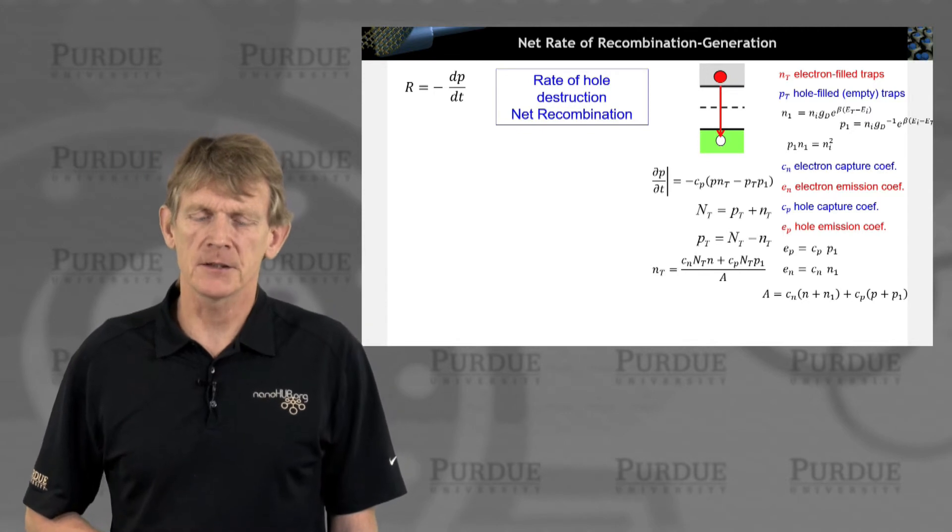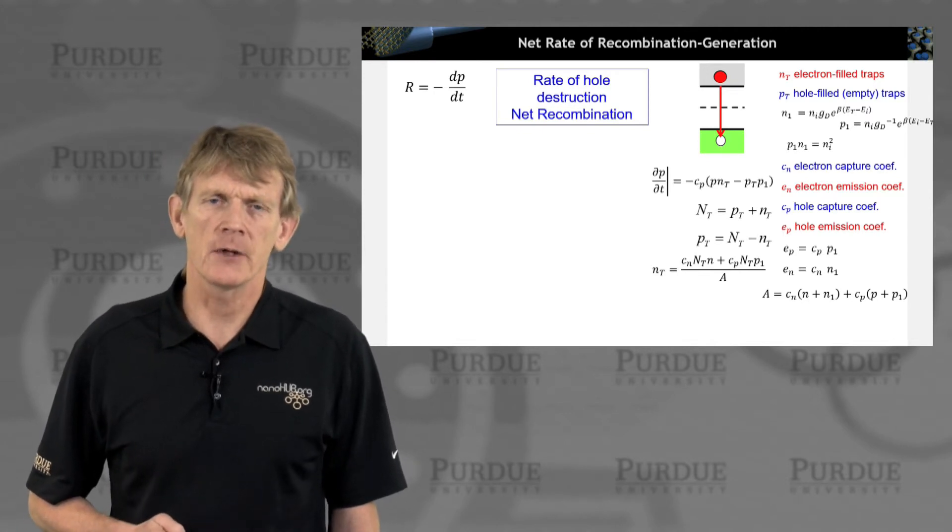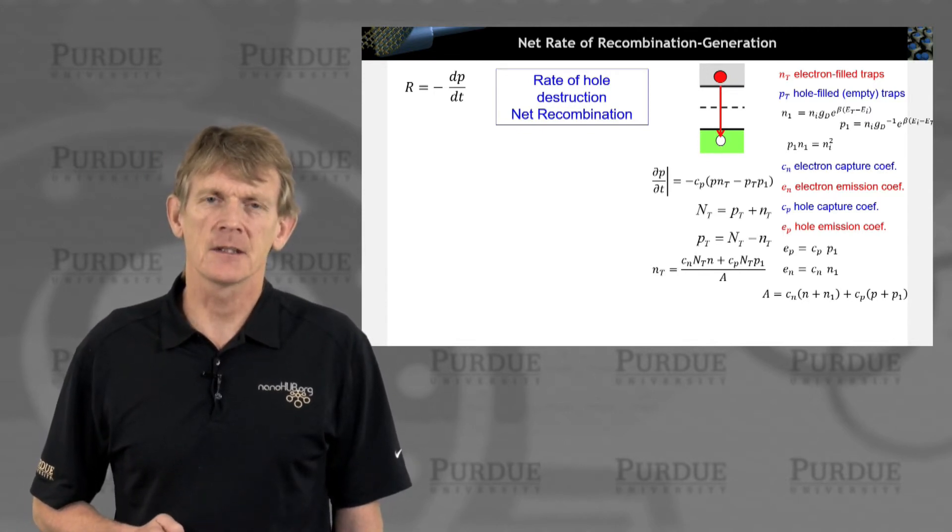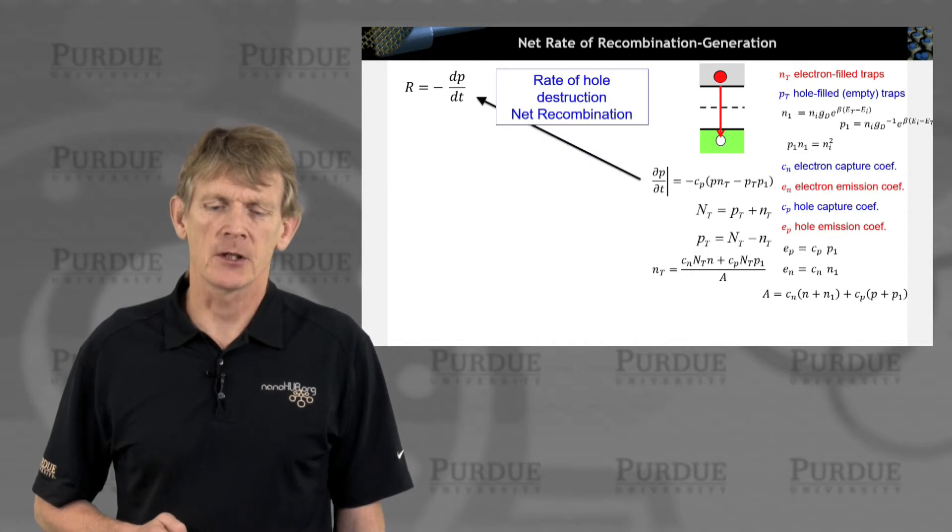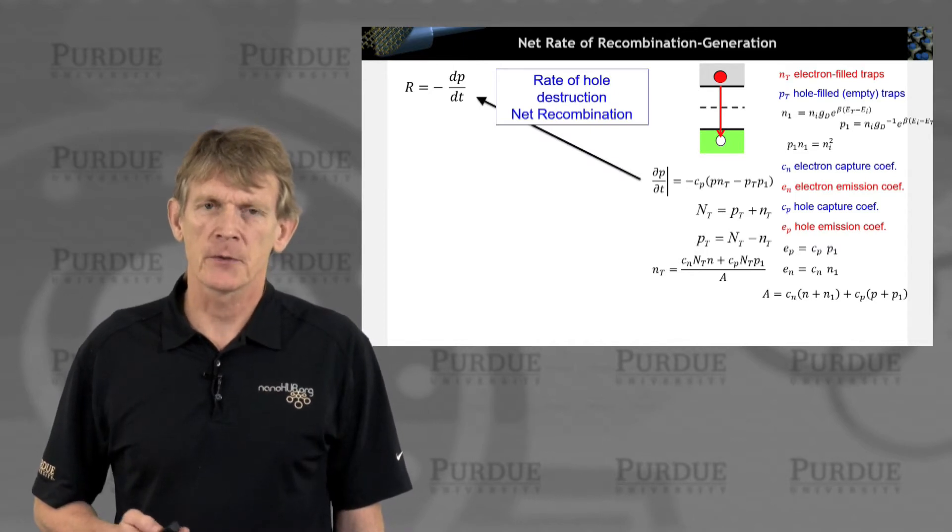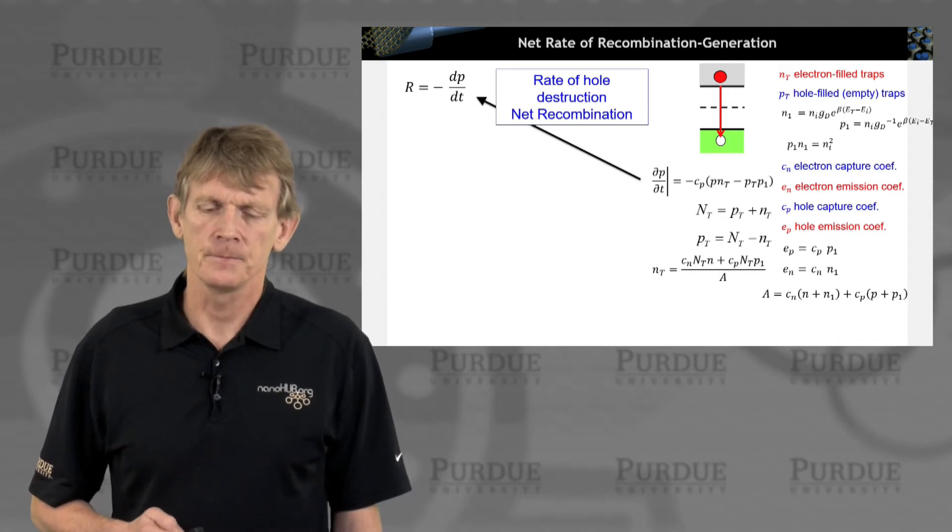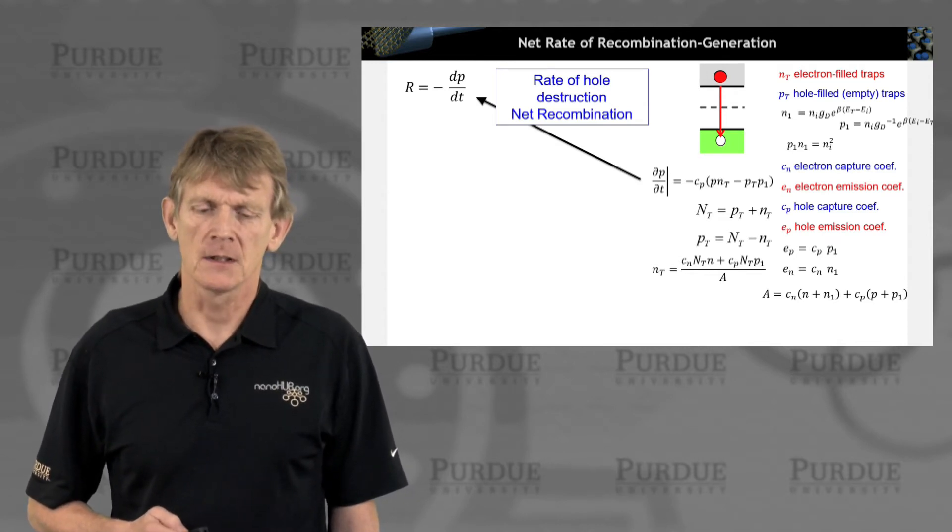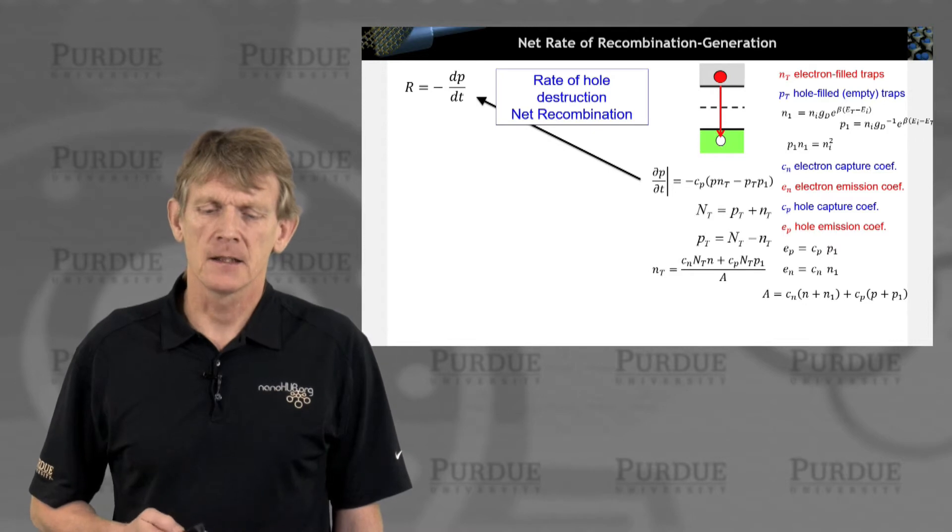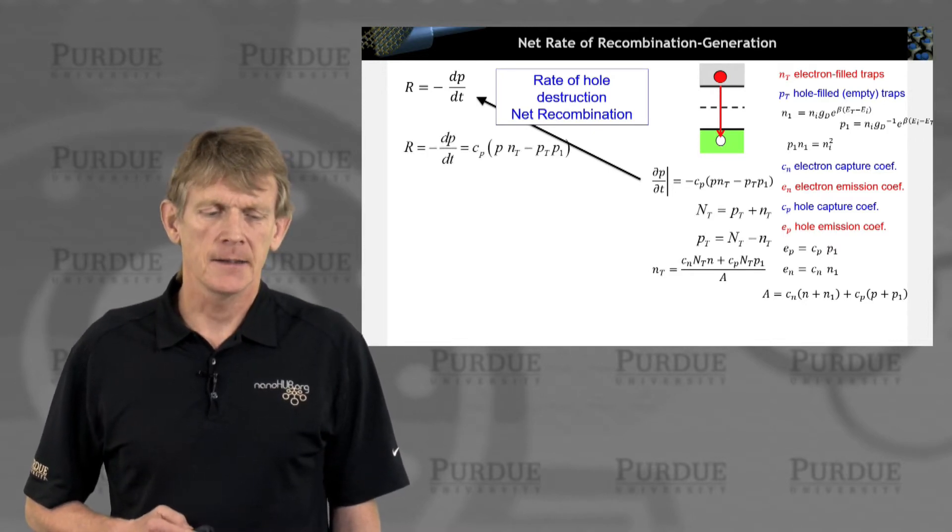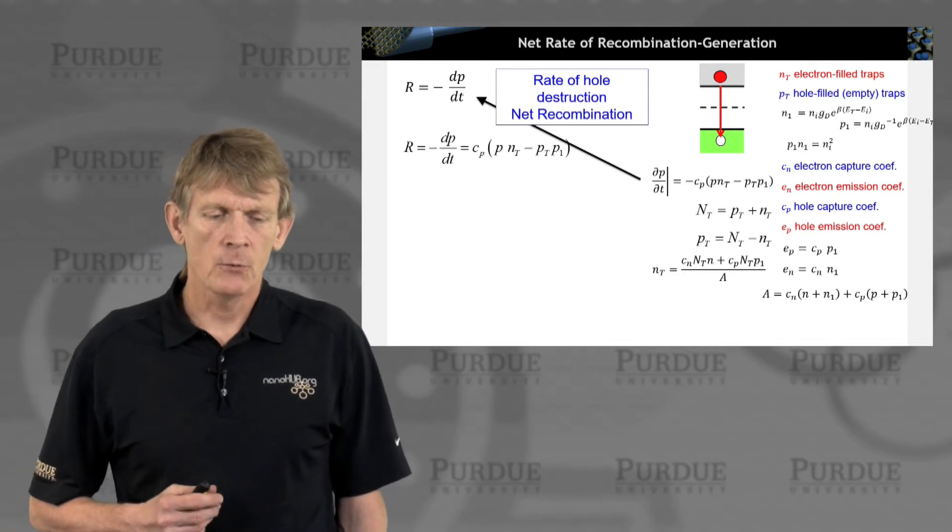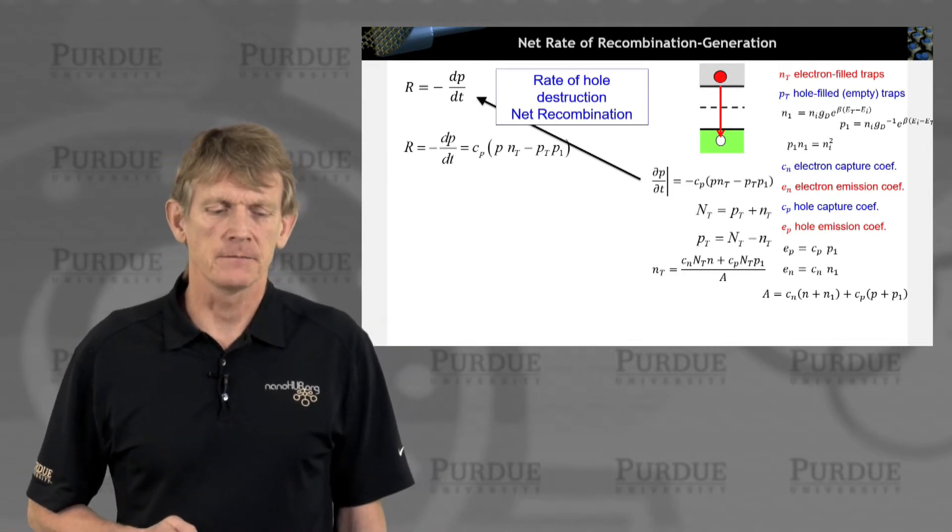Alright, so we have a toolbox of equations and expressions that we derived on the right. So let's dive in and calculate capital R, the recombination. From the previous slides, we had an expression for dP/dt which was relating capture and emission.